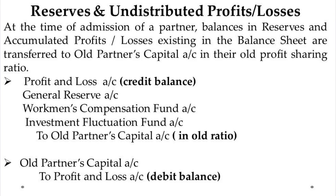Let us first understand the topic. When a new partner is being added in the business, in the existing balance sheet there are many times undistributed profits, undistributed losses, and many times some reserves. These reserves and accumulated profits or losses are distributed in the old partners' capital accounts in the old ratio.